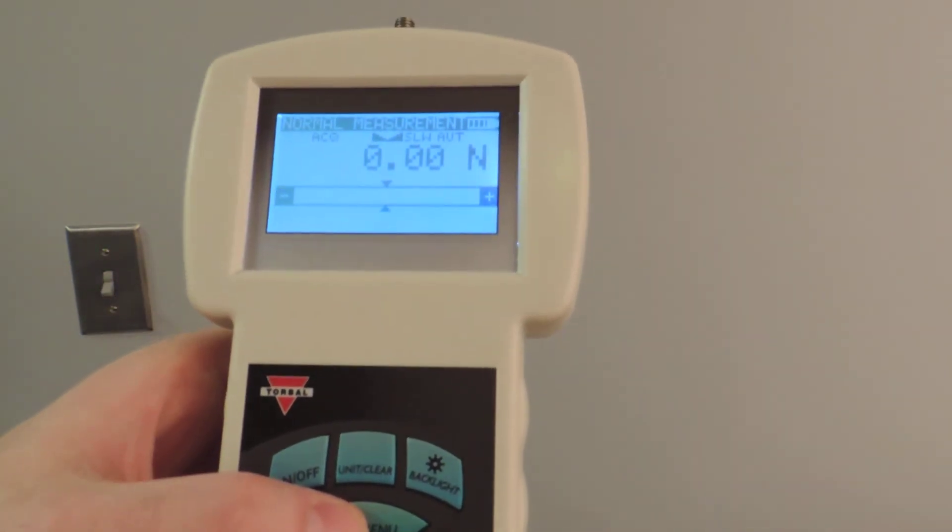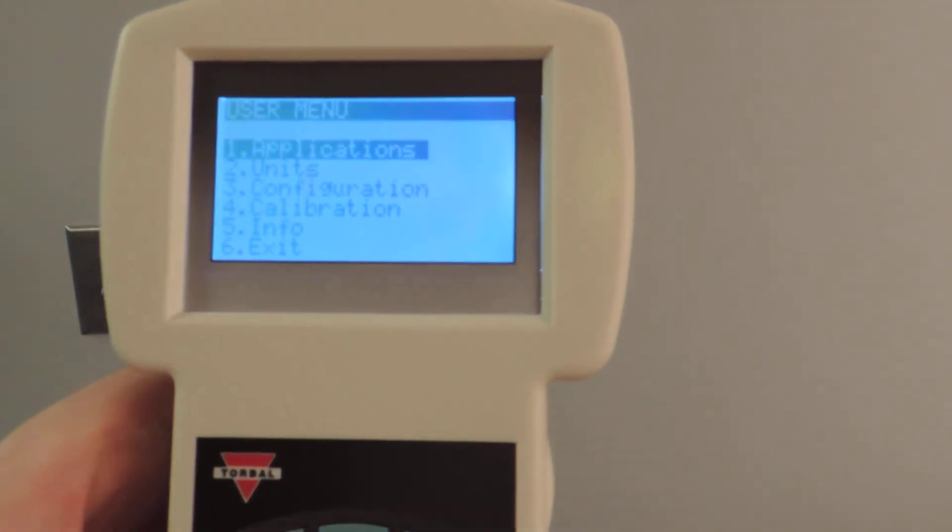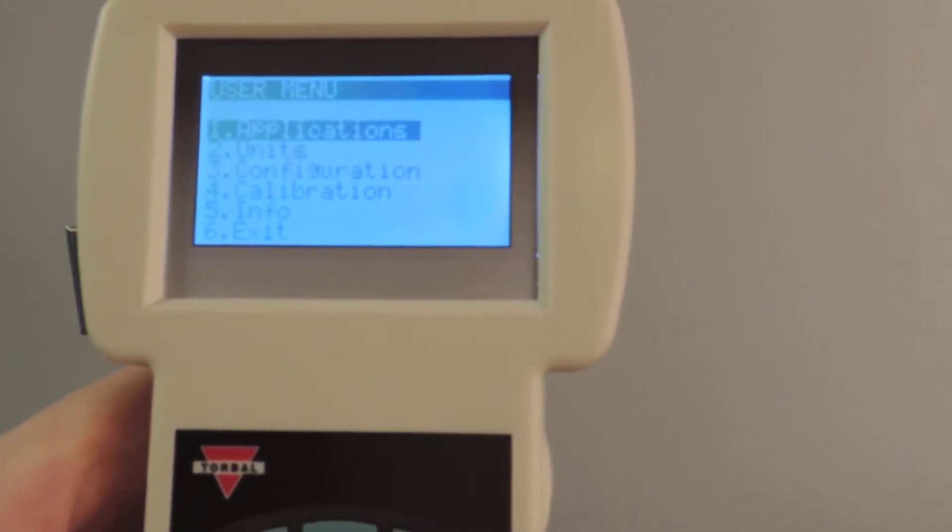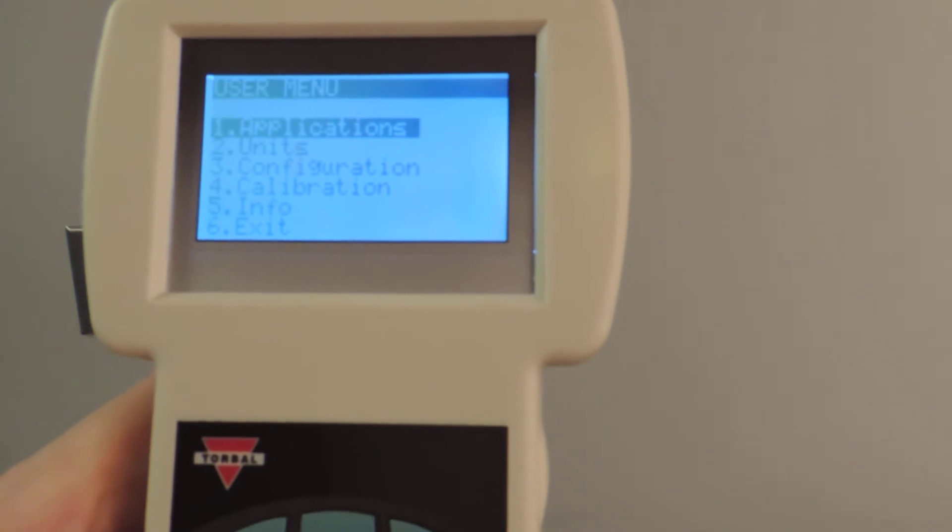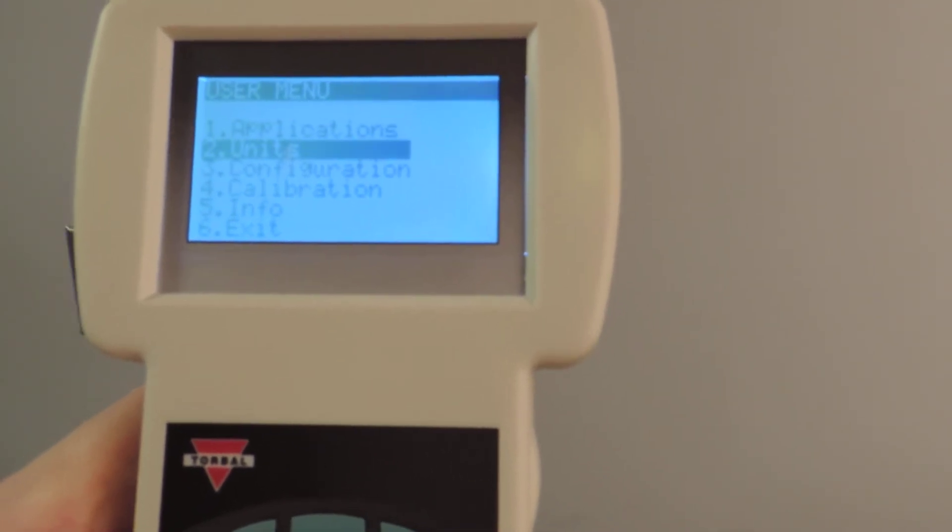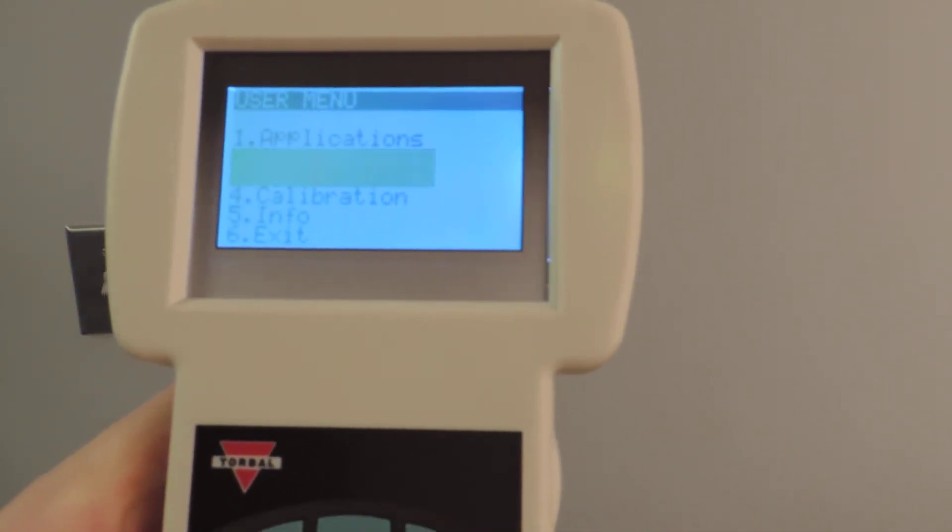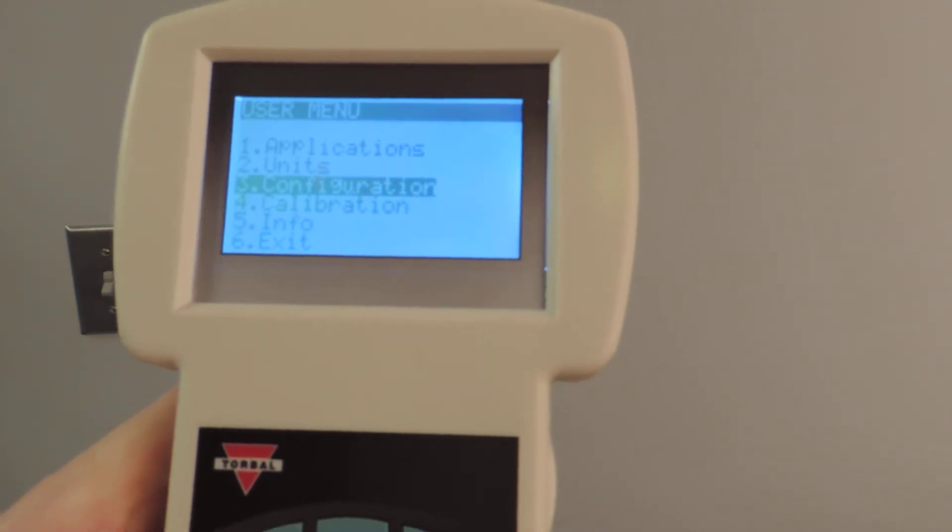If we take a look at the main menu, we'll see a number of different options including applications where you can access your currently saved statistics, the units menu, the configuration menu, and calibration.